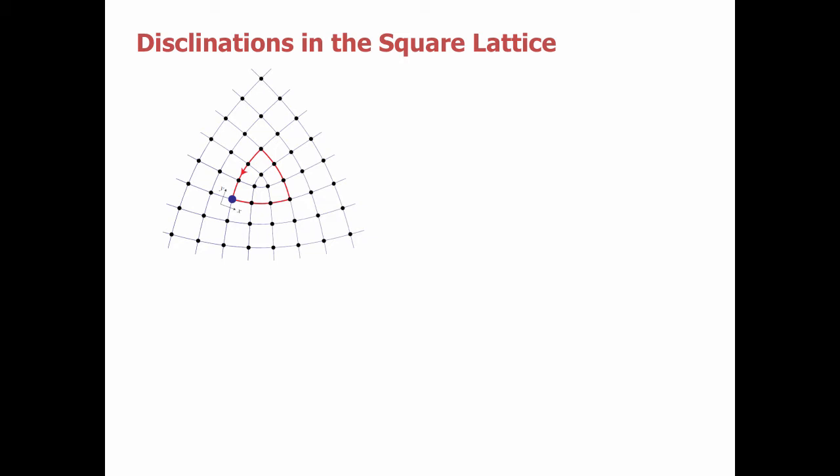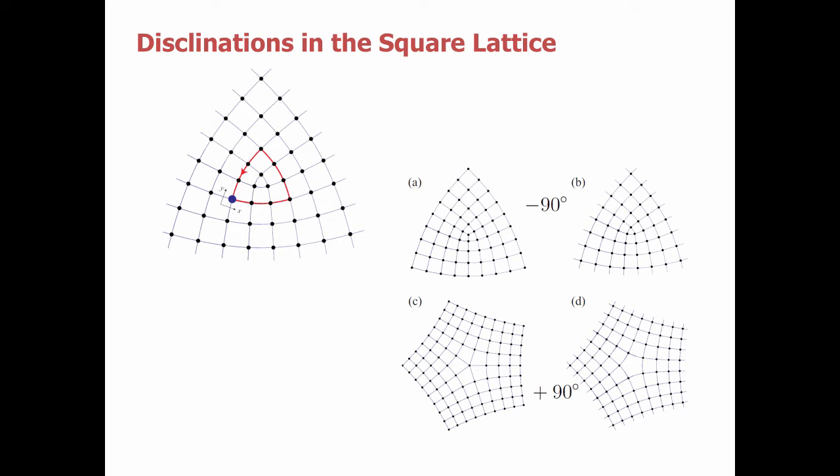For the square lattice, since there are two different rotation centers, we can have different types of defects with the same angular deficit. So for example, the top two defects here have the same minus 90 degree rotation angle once I traverse the path around it, but they differ in the core. For the left disclination, I have a trivalent vertex in the core. And for the right disclination, I have a triangular plaquette. The same can be said for plus 90 degrees. In these cases, on the left side, I have a five-valent vertex at the core. And in this case, I have a pentagon at the core. So we have two different types of disclinations for each angular deficit, either plus 90 or minus 90 for this case.